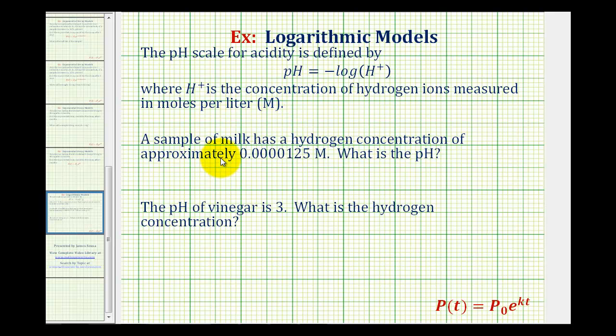If a sample of milk has a hydrogen concentration of approximately 0.0000125 moles per liter, we can find the pH by substituting this value in for the hydrogen ion concentration.